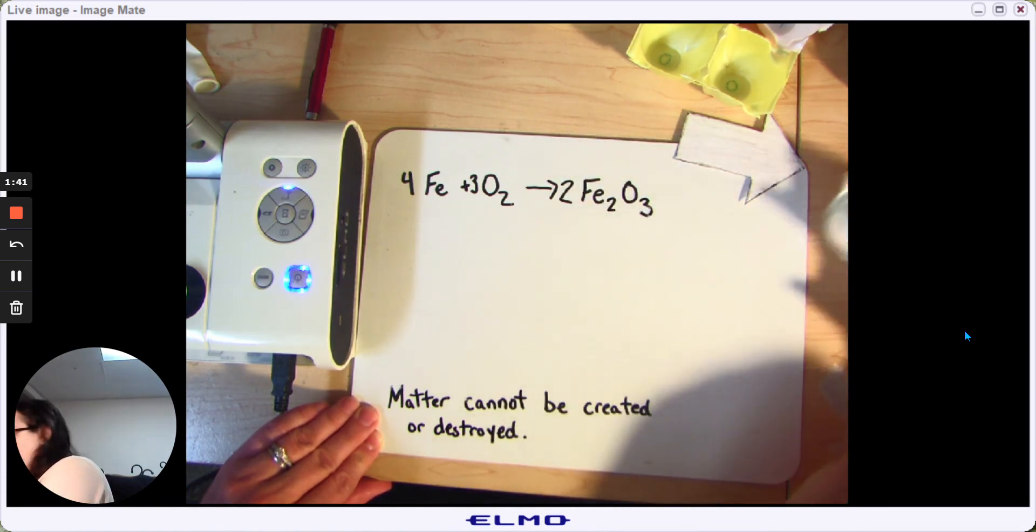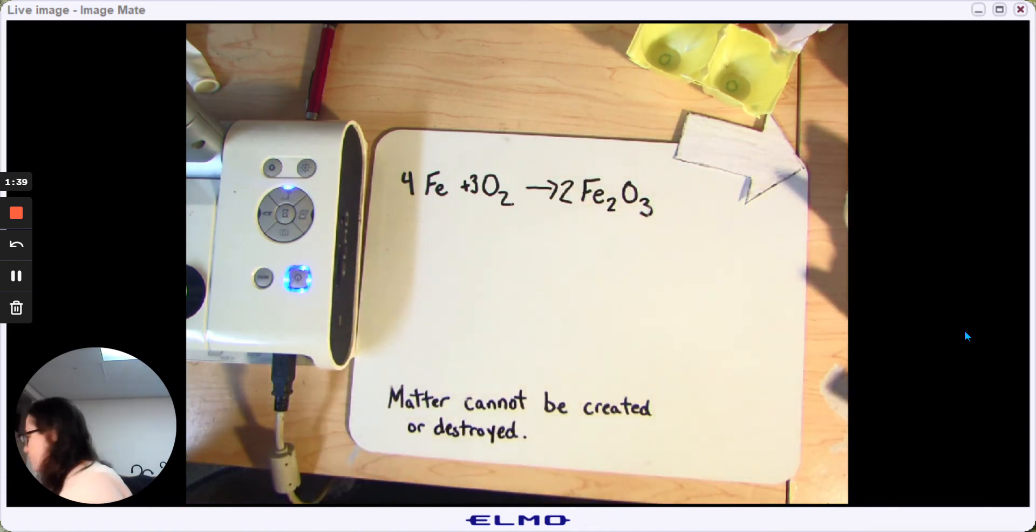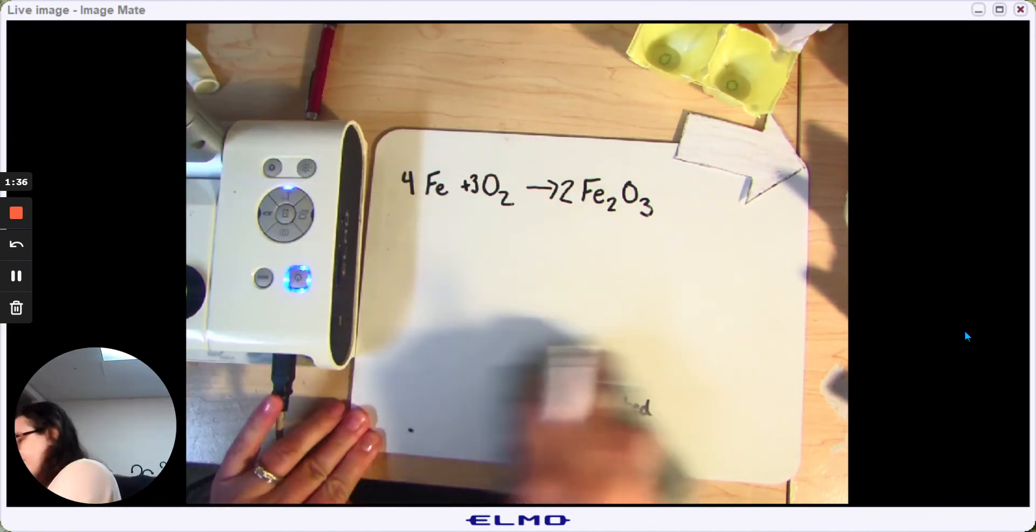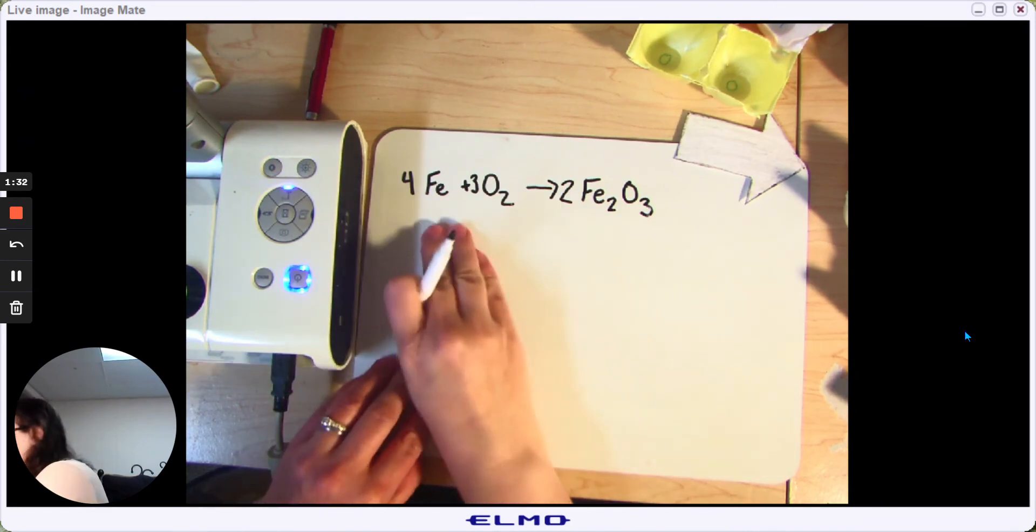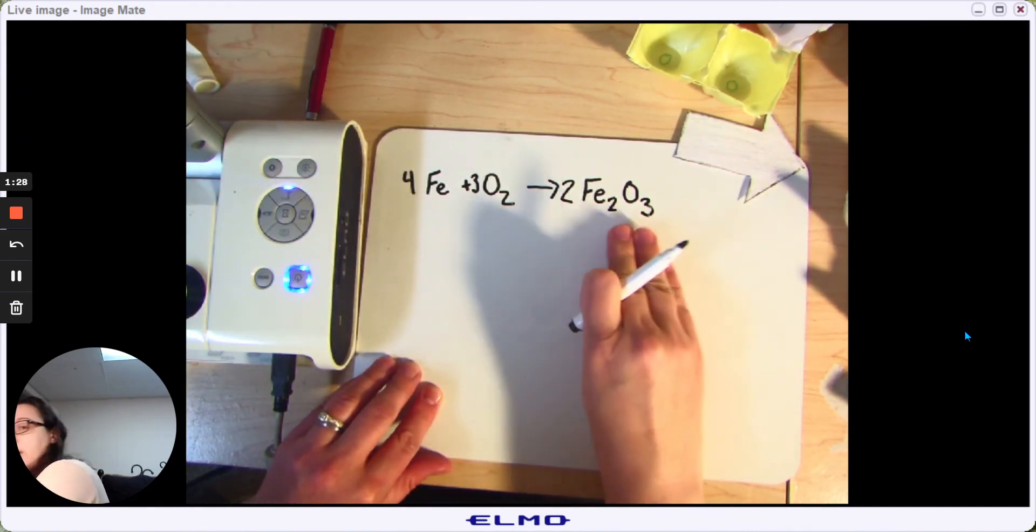And we can check that this is balanced using something called a T-chart. And that's what I want to show you today: how a T-chart can help you make sure that all the atoms that started over here are accounted for after the change.